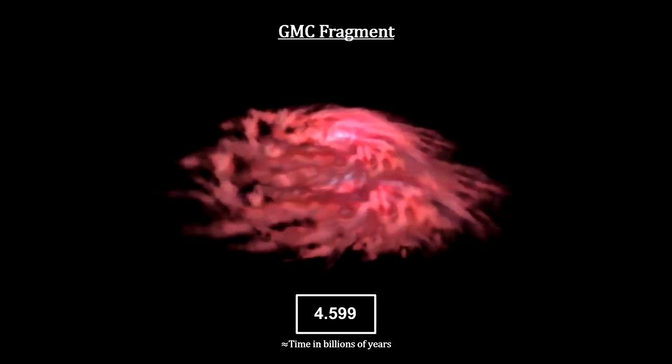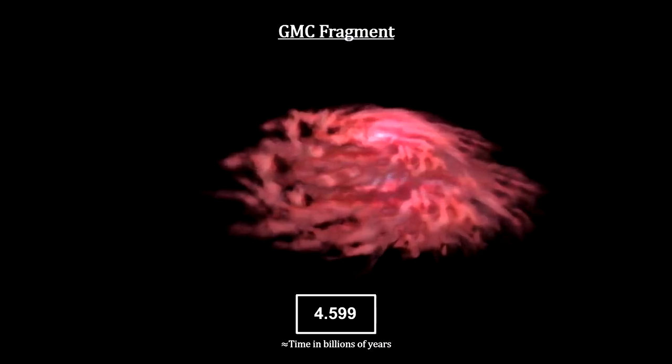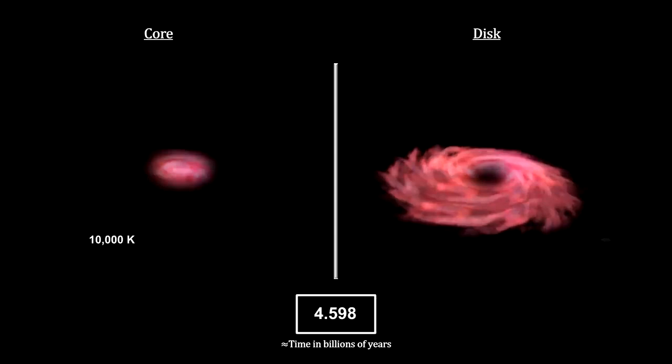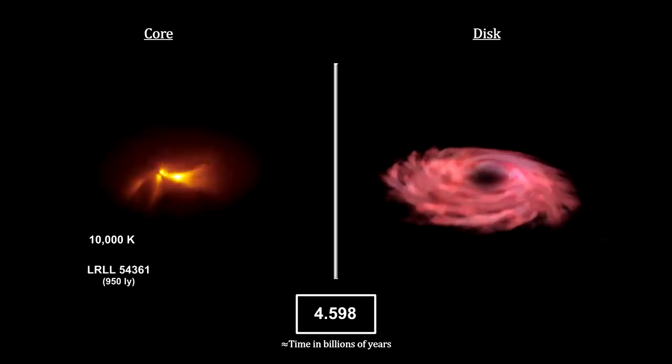From here on, we'll cover the development of the core object and the circumstellar disk in parallel. Over the course of the next million years, the central object continued to accumulate matter and its core temperature reached 10,000 degrees Kelvin. At this temperature, it began to shine by a normal, non-nuclear means. That made it a protostar. It may have looked like this one, just 950 light years away.